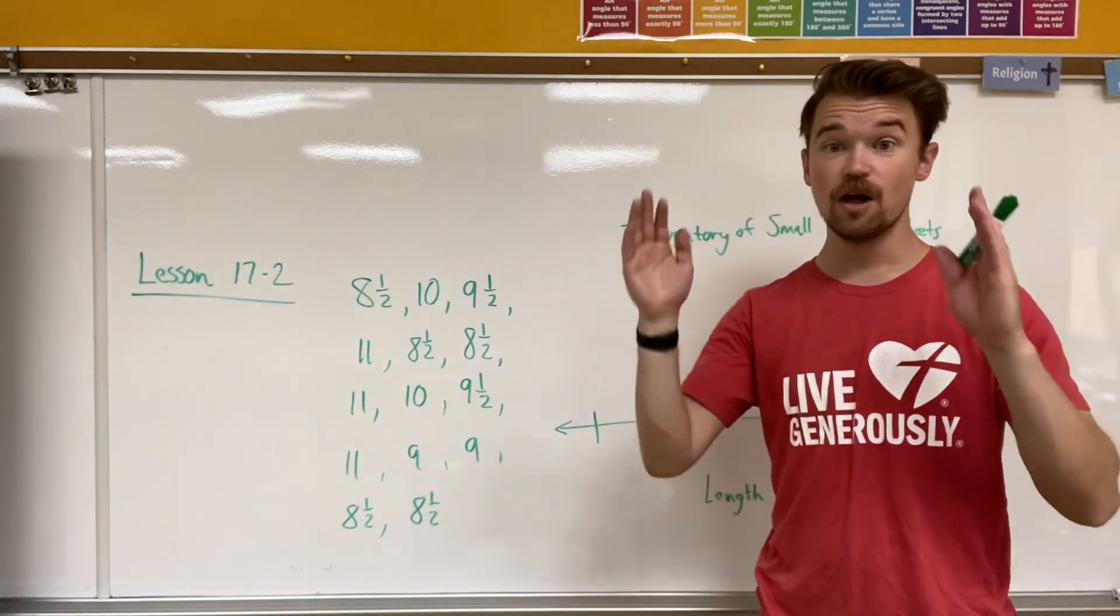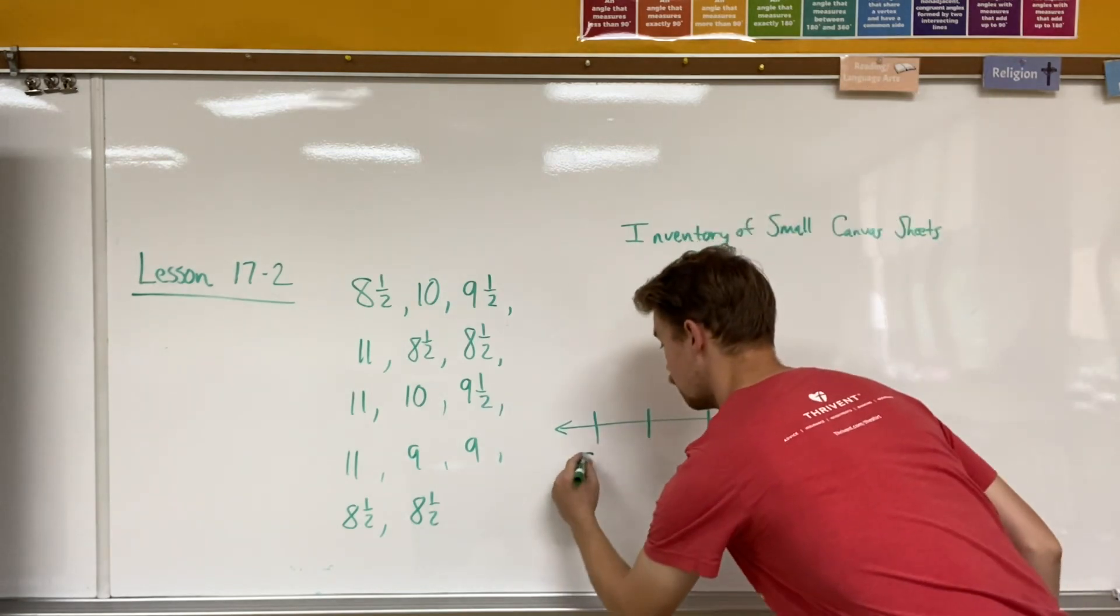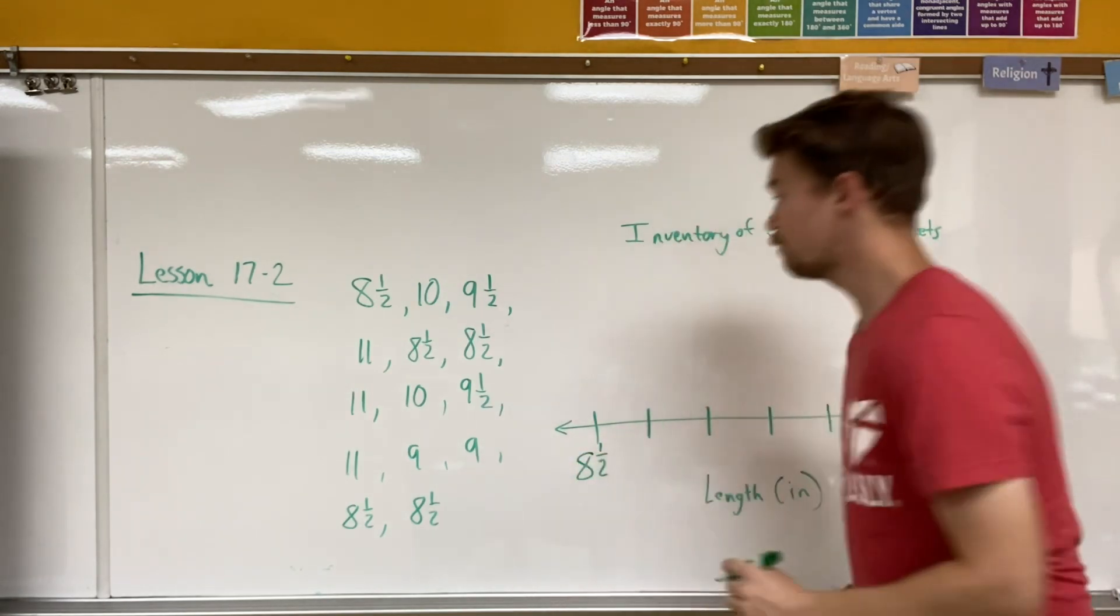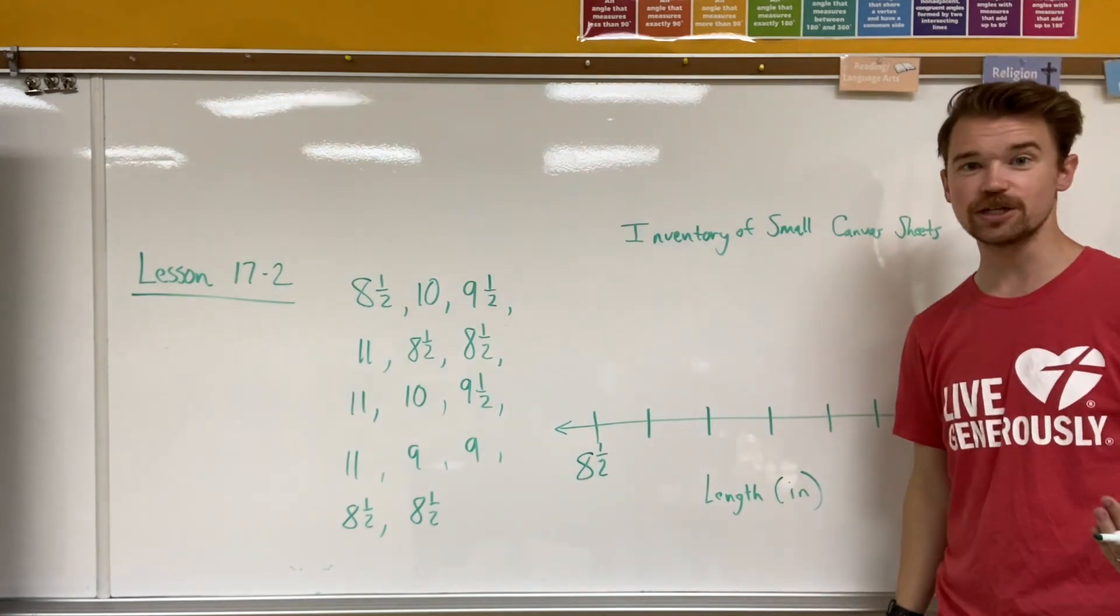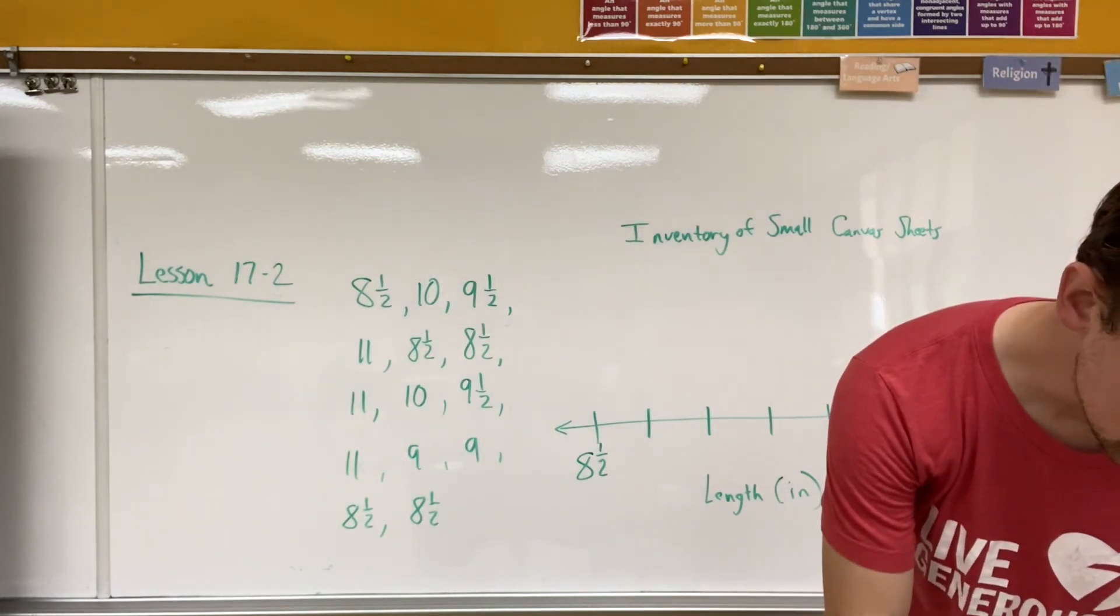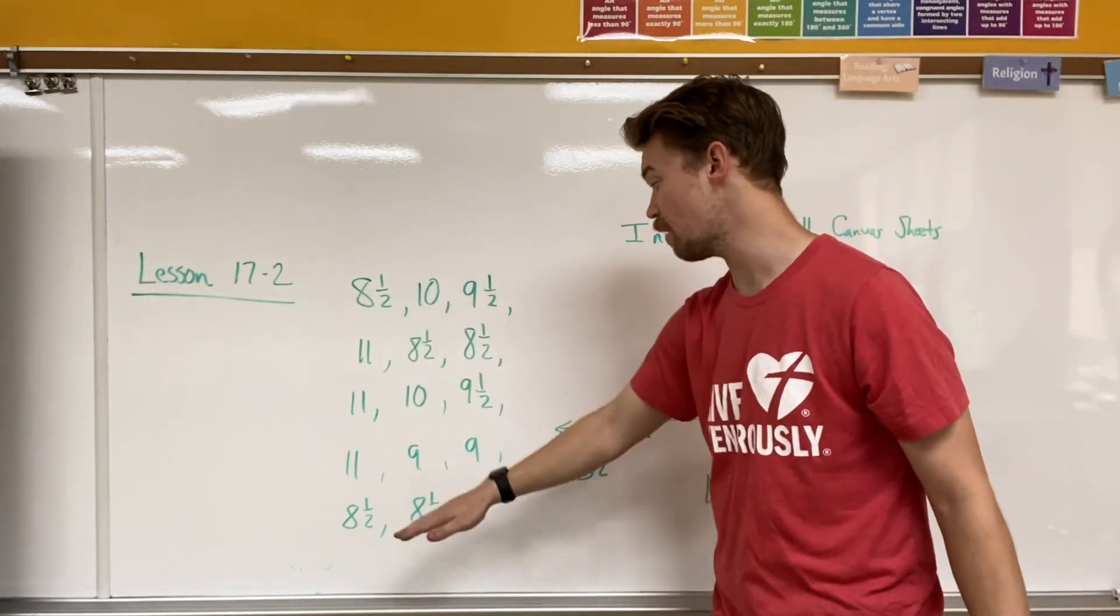So I have half inches and whole inches. I think it would be smart to start with my smallest one of eight and a half. And my largest one is 11. Let's go up by half inches. That way, that would be my scale. So my scale would be from eight and a half to 11. That's where my data set is.